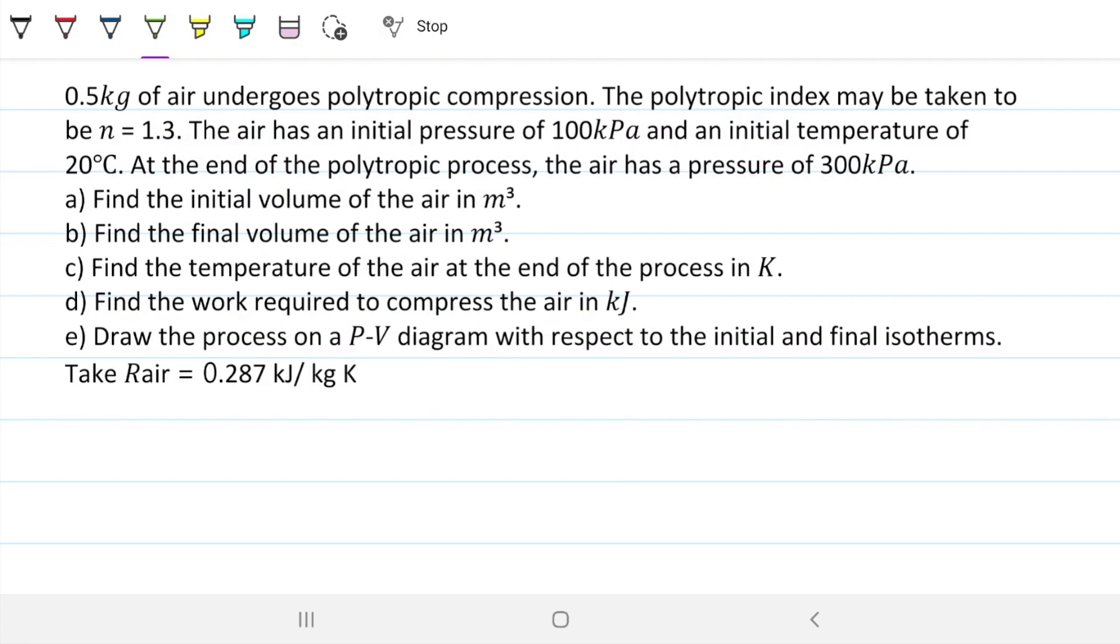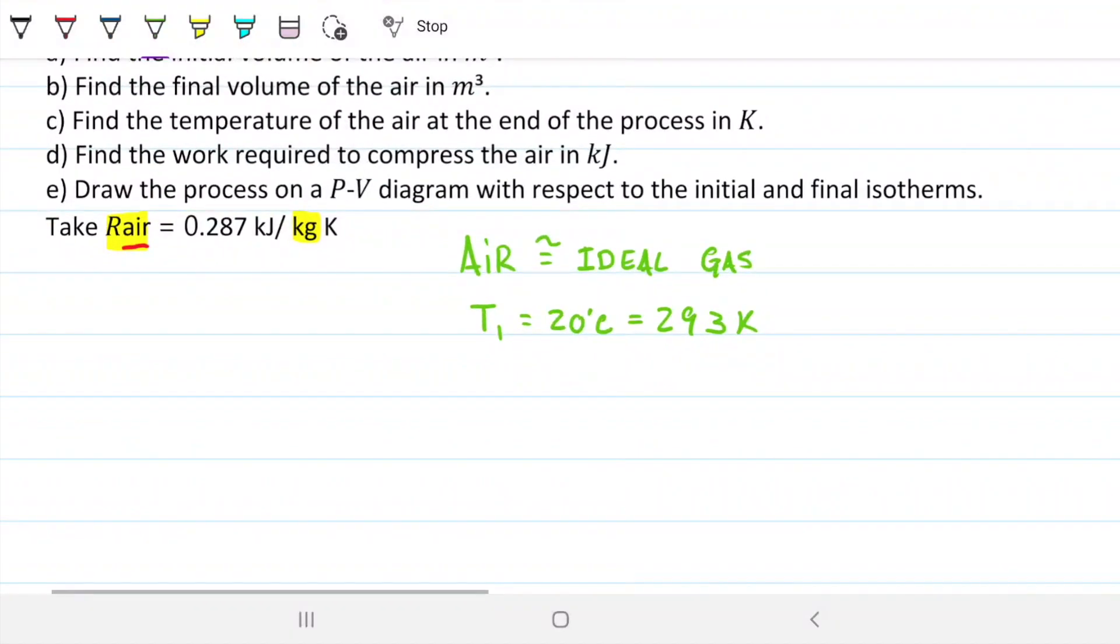They give us the ideal gas constant for air, R_air = 0.287 kJ/kg·K. We know this is for air because it's per kilogram instead of per mole. Let's make this visual and draw it down. Remember that we can approximate air to be an ideal gas for most situations. Also remember that when we're talking about gases, our temperature in Celsius doesn't really mean much. So let's convert this: T₁ = 20°C + 273 = 293 K.